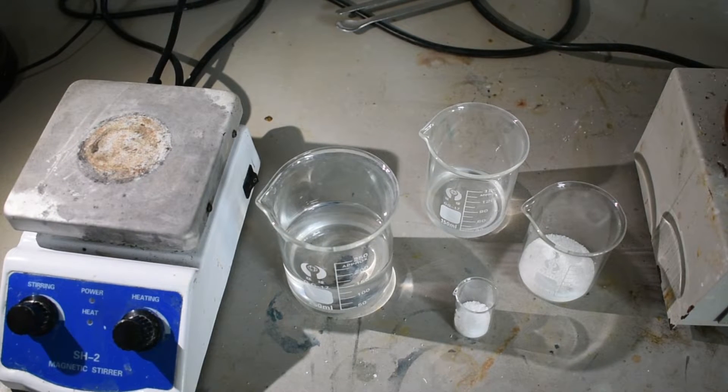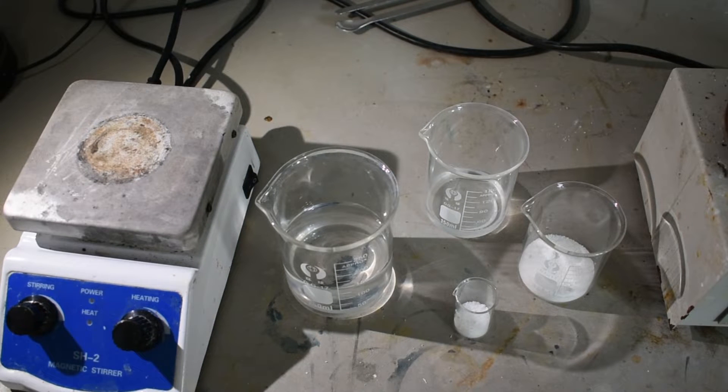We only need three reagents to make sodium perborate: 30 milliliters of 35% hydrogen peroxide, 5 grams of sodium hydroxide, and 24 grams of sodium tetraborate.